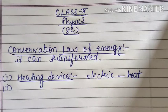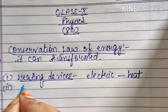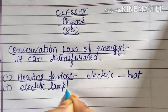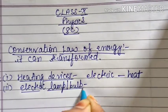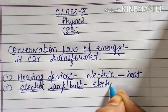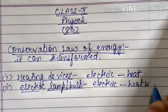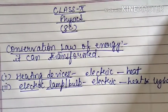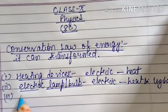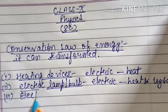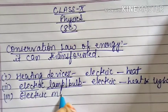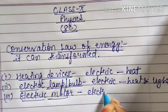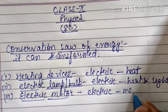The 2nd example is an electric lamp or bulb. We know that it converts electrical energy into heat and light. The 3rd example is an electric motor. We know that an electric motor converts electrical energy into mechanical energy.